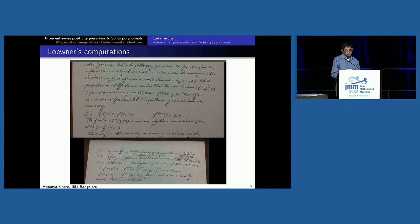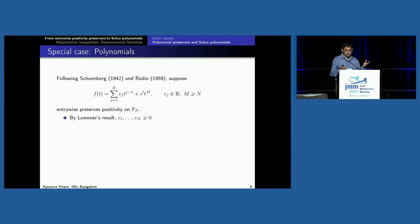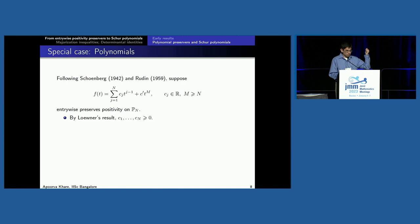Going back to the original problem: I have a polynomial with exactly n+1 terms that preserves positivity on n×n matrices when applied entrywise. By the necessary condition I showed you, the first n derivatives are non-negative. The real question is: can the leading term, the next one, be negative? If you think about it, Schoenberg's theorem said if you have a polynomial with positive coefficients, it preserves positivity in every dimension. But I'm only asking to preserve positivity in a fixed dimension — a much smaller test set. So there should be at least one polynomial with a negative coefficient that preserves positivity in fixed size. However, until 2016, not a single example was known.